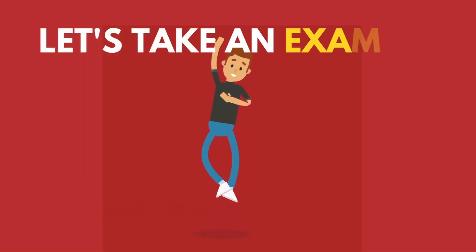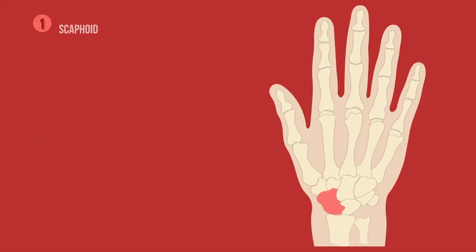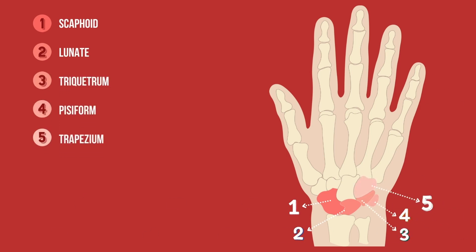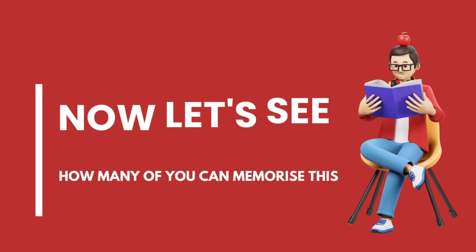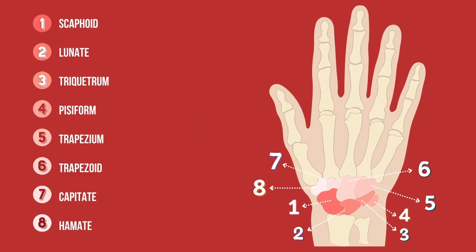Let's take an example. The human wrist has 8 bones: scaphoid, lunate, triquetrum, pisiform, trapezium, trapezoid, capitate, and hamate. Now let's see how many of you can memorize this in 15 seconds. Your time is up now.